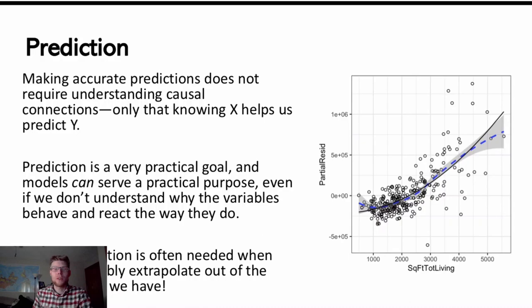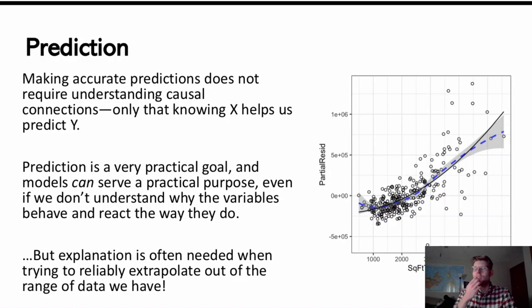Prediction's a little bit different. Prediction doesn't really care so much about which one's the causal agents and what are simply associative factors. The end game is that we just want to be able to predict a response variable with a lot of reliability. Prediction's a much more practical goal. We don't necessarily need to understand why the variables behave the way they do.